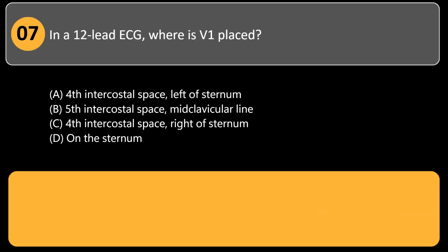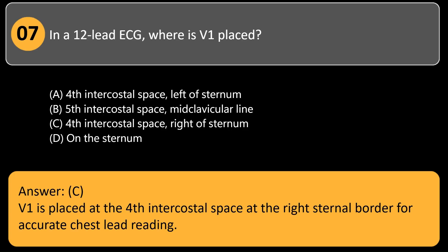In a 12-lead ECG, where is V1 placed? A. Fourth intercostal space, left of sternum. B. Fifth intercostal space, midclavicular line. C. Fourth intercostal space, right of sternum. D. On the sternum. Answer: C. V1 is placed at the fourth intercostal space at the right sternum border for accurate chest-lead reading.